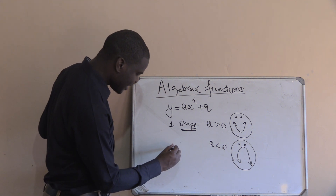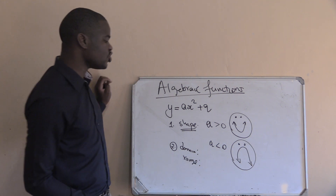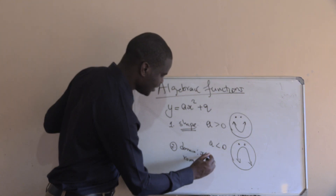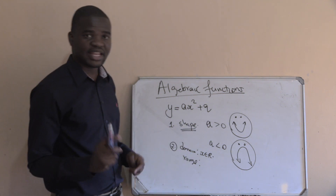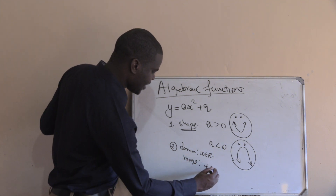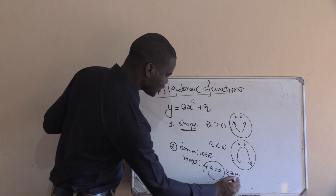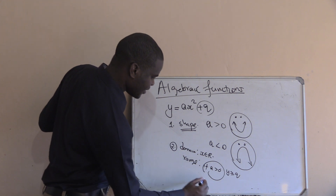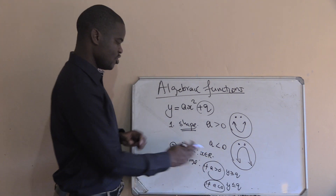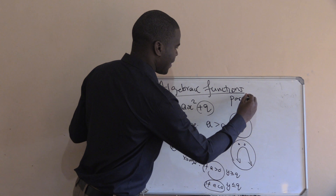The next step is the domain and the range of the graph. The domain of the parabola is always x is an element of all real numbers. If a is greater than zero, the range is y greater or equal to q. If a is less than zero, the range is y less or equal to q.